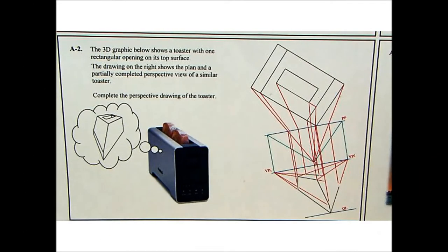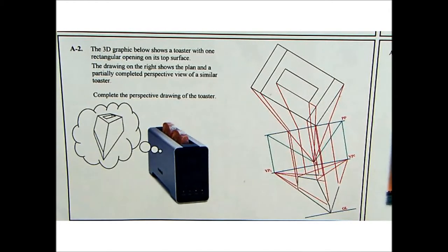Hi, my name is PJ Maitavish and welcome back to another DCG tutorial. We're continuing on with short questions and we're on the 2013 paper. This is ordinary level, section A, question A2. The 3D graphic below shows a toaster with one rectangular opening on its top surface. The drawing on the right shows a plan and a partially completed perspective view of a similar toaster. Complete the perspective drawing of the toaster.